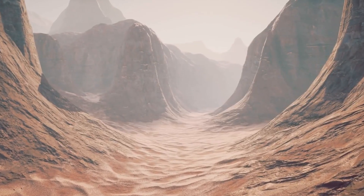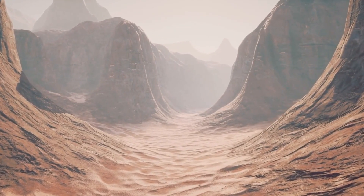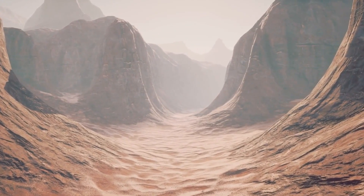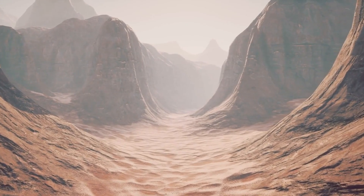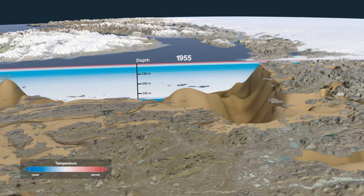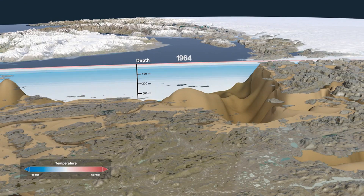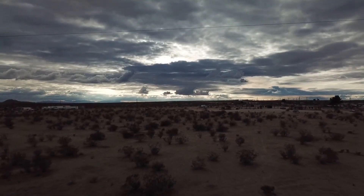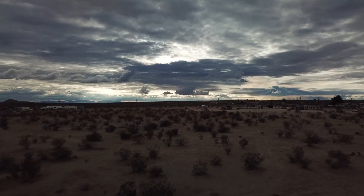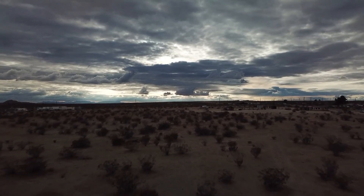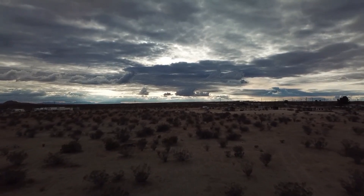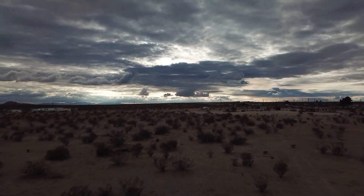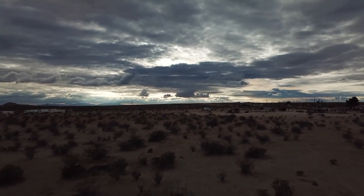One of the primary factors contributing to desert formation is the global atmospheric circulation. The Earth's atmosphere has large-scale wind patterns that distribute heat and moisture around the globe. Deserts often form in the subtropics, between 15 and 30 degrees north and south of the equator, where dry air descends, creating arid conditions.